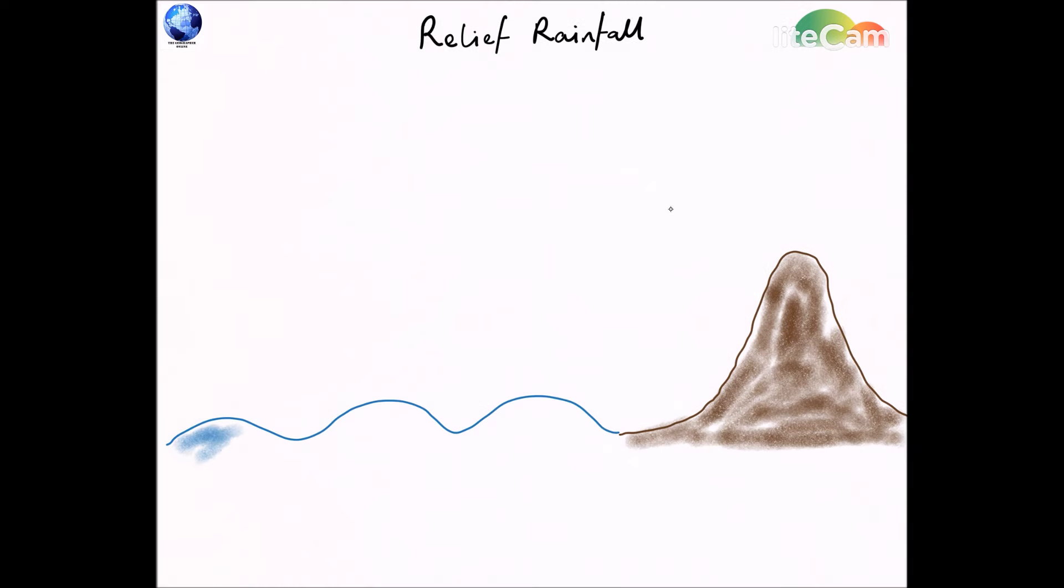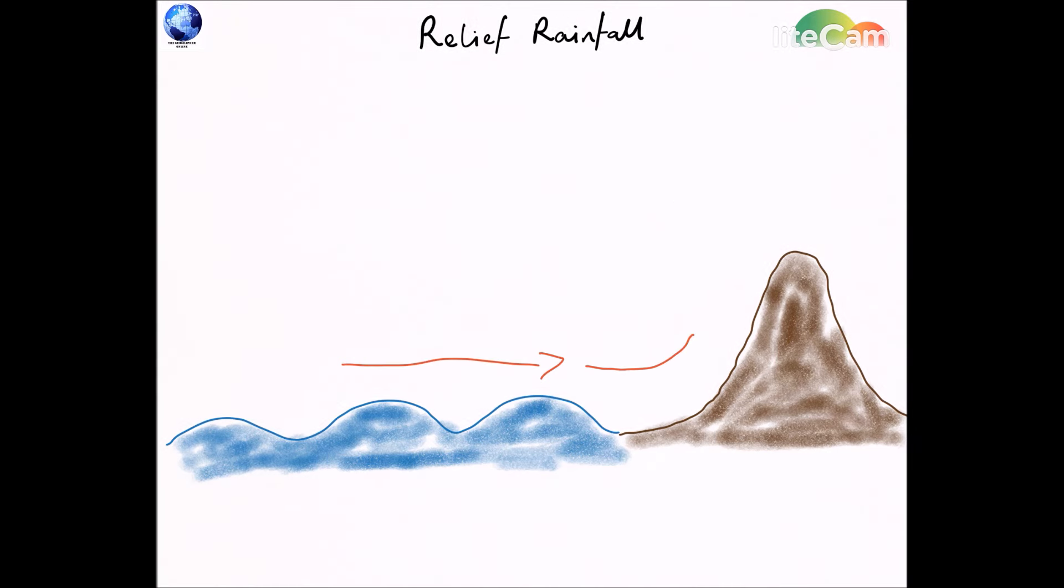So in relief rainfall, what is making air rise and cool is the relief of the land. If you see over here in the diagram, we have a nice mountain that is close to the sea. Now this warm, moist air that is hanging over the surface of the sea gets blown inland. And as it gets blown inland, it comes into contact with this mountain.